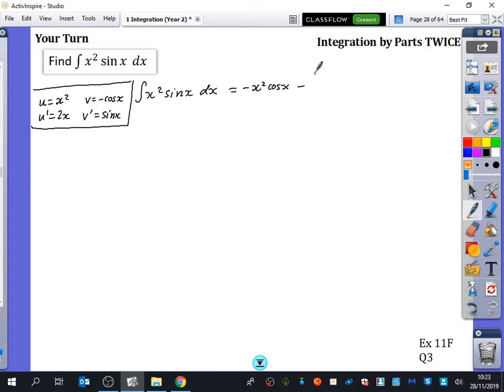And then we minus the integral of the two that we haven't used, which is minus 2x cos x dx. Now, I'm going to rewrite that line because I don't like the minus and the minus here. So I'll write it as minus x squared cos x plus the integral of 2x cos x dx.